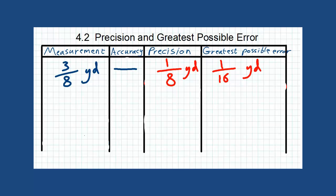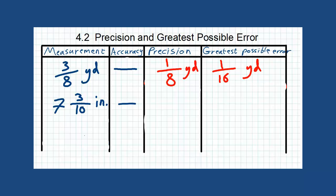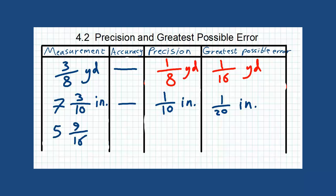Another example: 7 and 3/10 inches. There is no accuracy. The precision is 1/10 inch. Divide by 2 and the greatest possible error is 1/20 inch. A final example: 5 and 9/16 miles. The precision is 1/16 mile, and the greatest possible error is 1/32 mile.